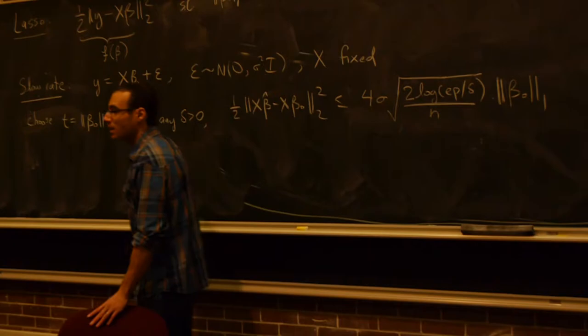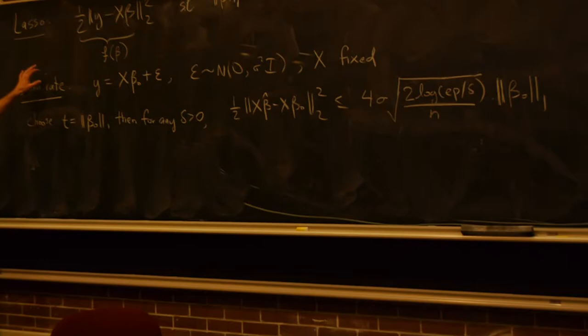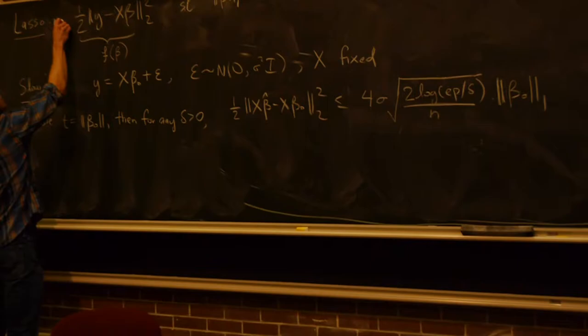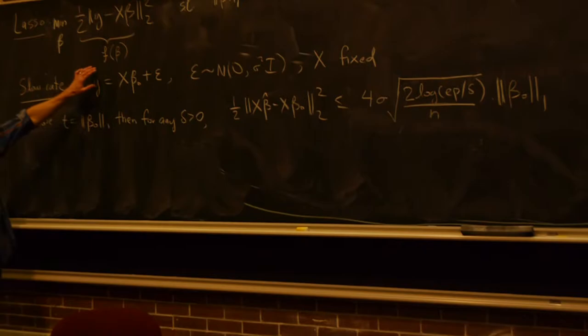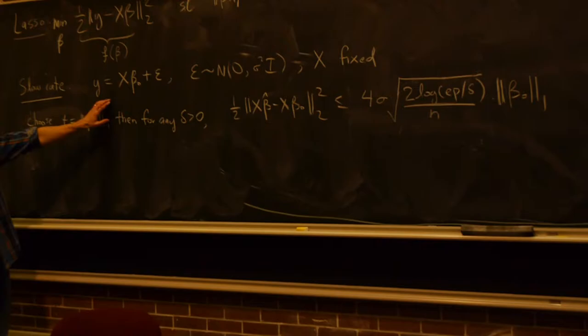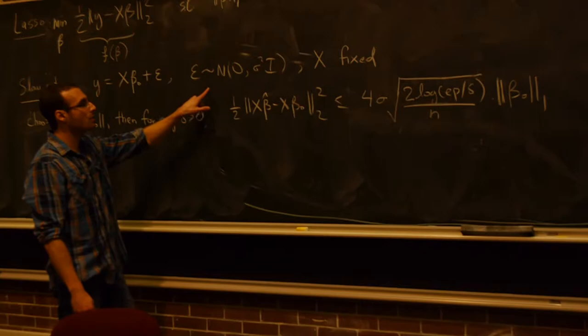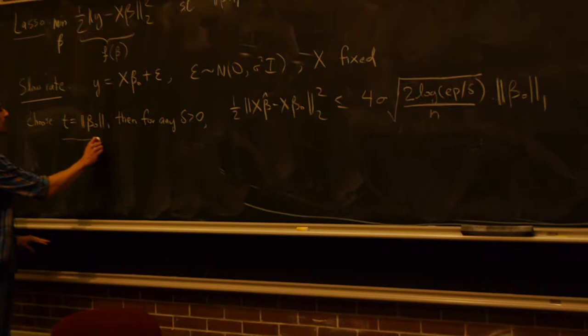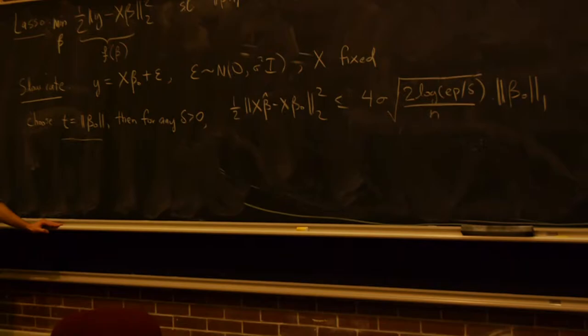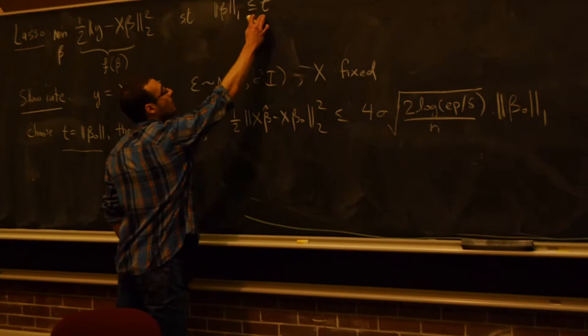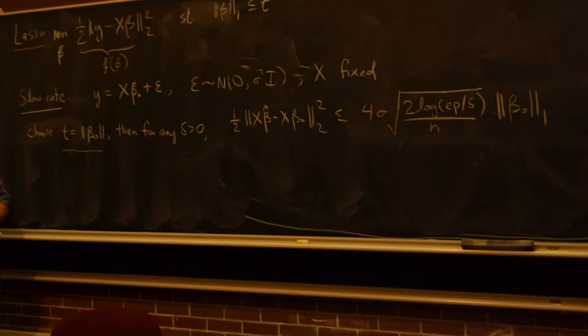Let's recall the result we proved at the very end of last class. This is the lasso program — the convex optimization problem where we choose beta to minimize the criterion F of beta, the least squares loss subject to an L1 constraint. If you have an underlying linear model where the errors are normal with mean zero and covariance sigma squared, and x is fixed, then if we choose the penalty parameter T to be the L1 norm of the underlying coefficients — the right level of complexity — we get the following result.